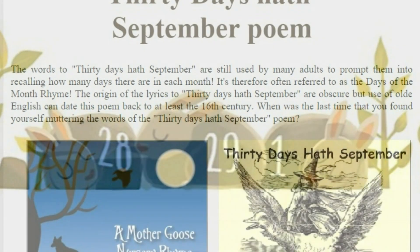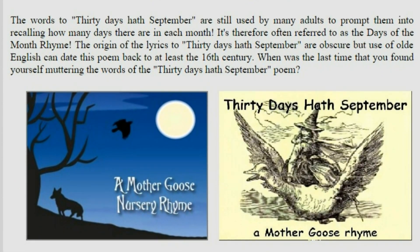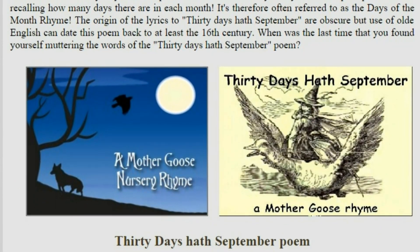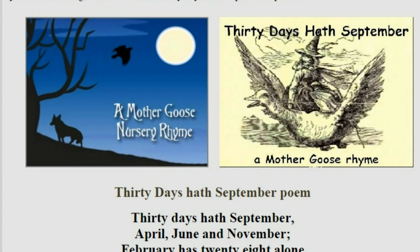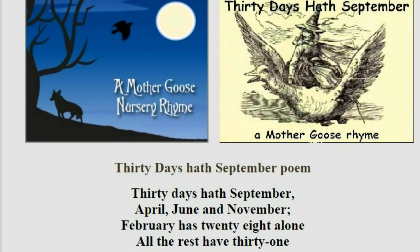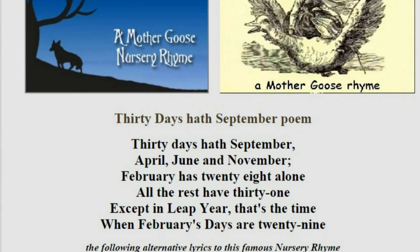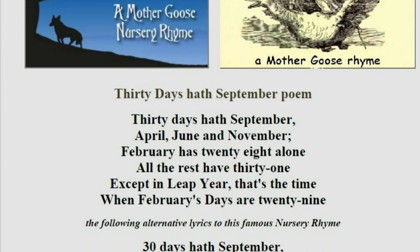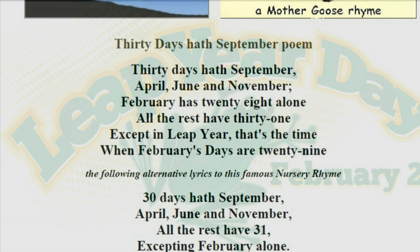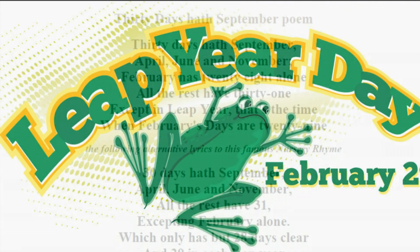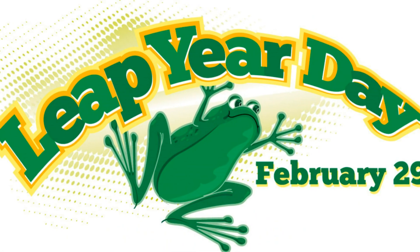We all know the rhyme: 30 days has September, April, June, and November; 31 has all the rest, except for February clear, which has 28 and 29 in a leap year. And today is that very leap day, as 2016